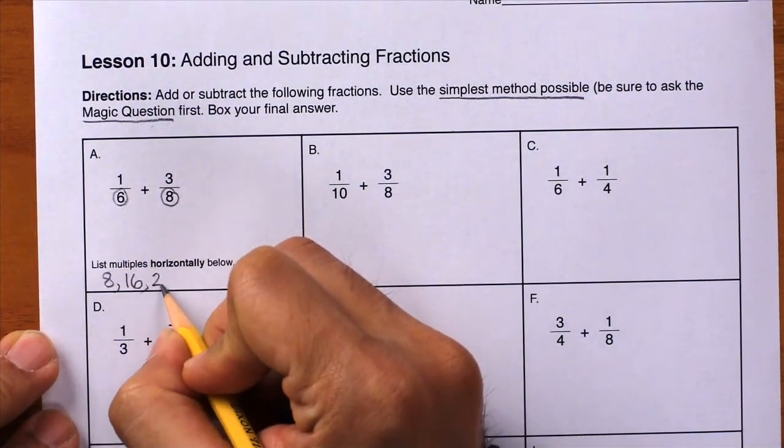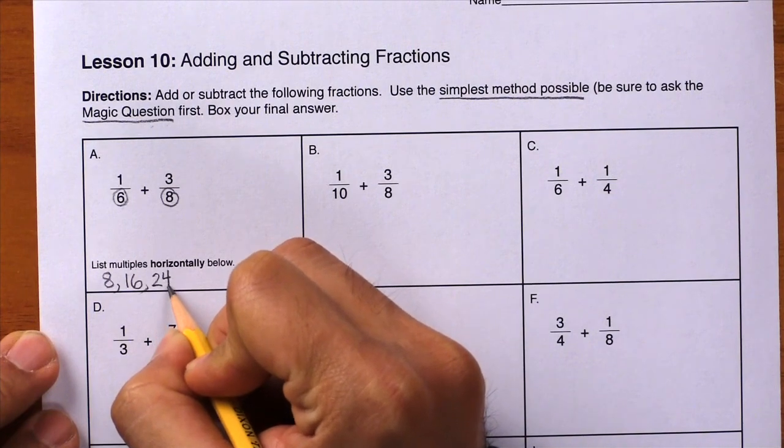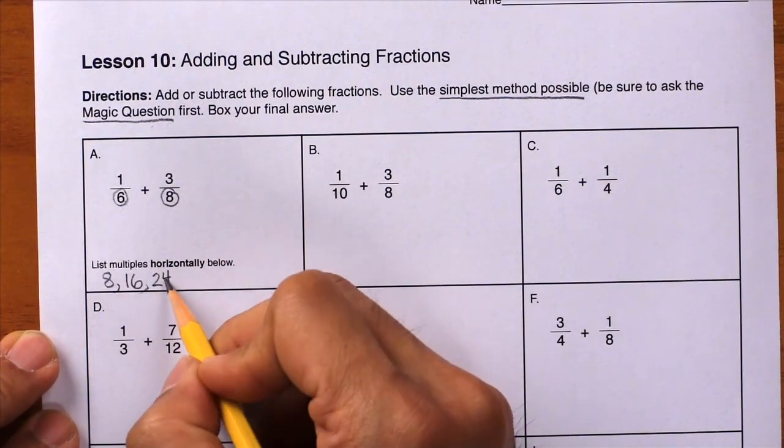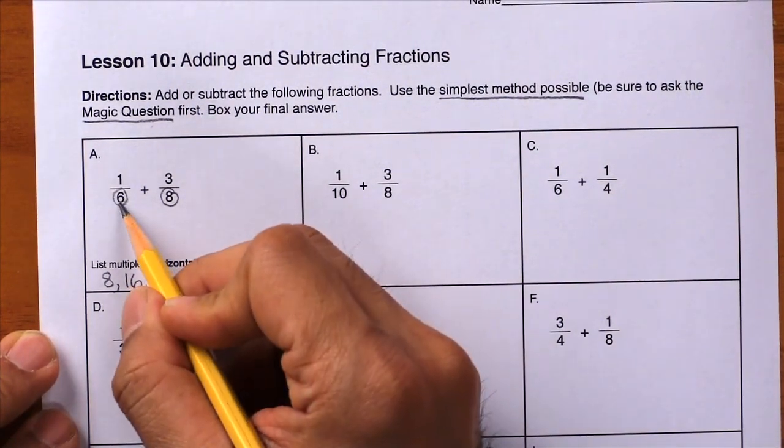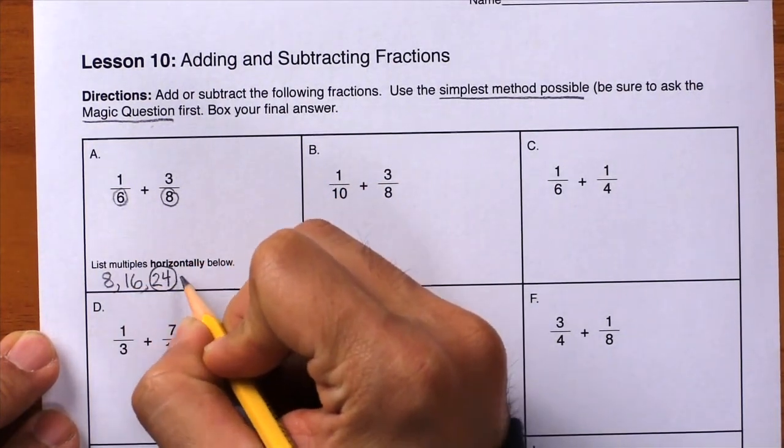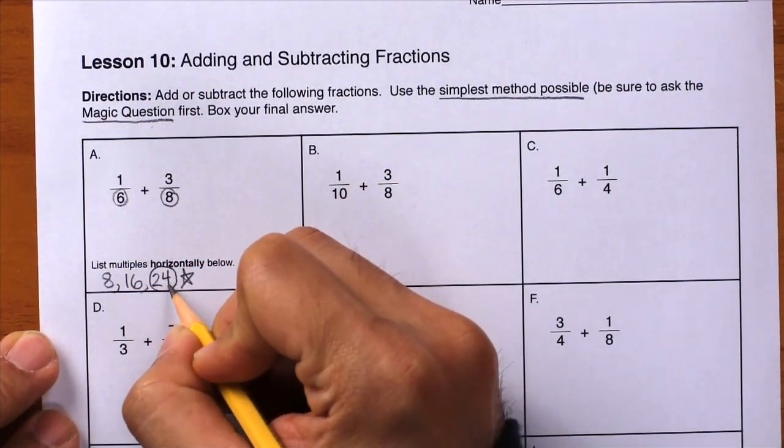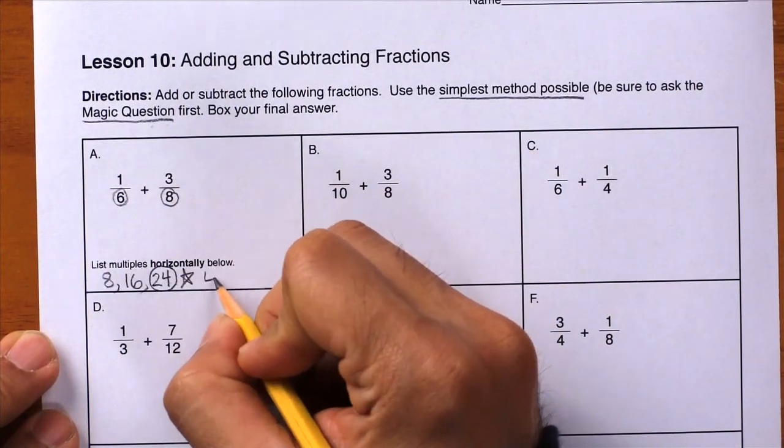Next is twenty-four, and stop. Can you do twenty-four divided by six evenly? The answer is yes, circle and star, and twenty-four is our LCM.